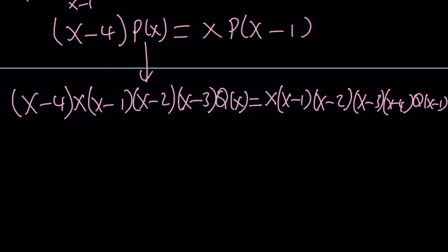Pretty much everything will cancel out. X minus 4, X minus 4, X, X, X minus 1, and X minus 2 together, and X minus 3. And all of that is canceled out, leaving us with Q of X equals Q of X minus 1.